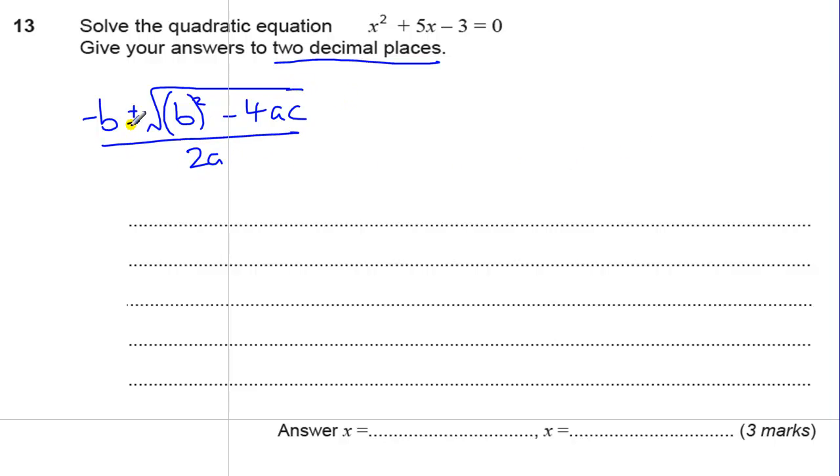Okay, where do these letters come from, a, b and c? Well, a, b and c are the numbers in front of the parts of the equation. The general equation is ax squared plus bx plus c equals 0.